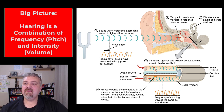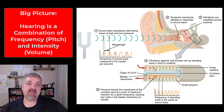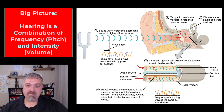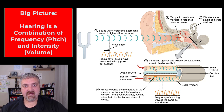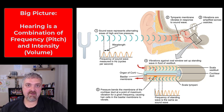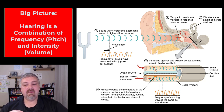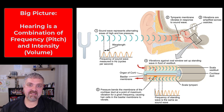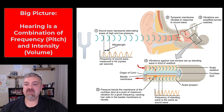Hey everybody, Dr. O here. In this video we're going to cover hearing. Hearing is going to be occurring in the cochlea, which is in the inner ear. Your brain needs to know the frequency of the sounds you're hearing to determine the pitch. It needs to know the intensity of the sound you're hearing to determine the volume. We're going to see how the cochlea plays a role in telling the brain both the pitch or frequency of the sound you're hearing, and the intensity, which is going to be measured in decibels.